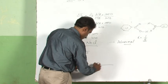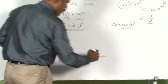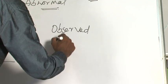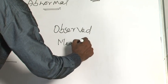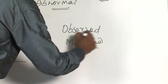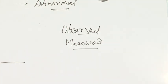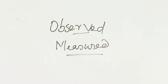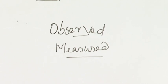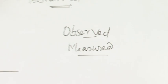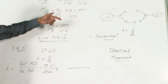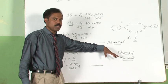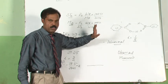There are two kinds of colligative properties: observed and measured. What it means is you observe whatever happens when you dissolve a substance. In the case of sodium chloride there will be an abnormality — the colligative property will be double. You also find out what the actual colligative property would have been had there been no association or dissociation.